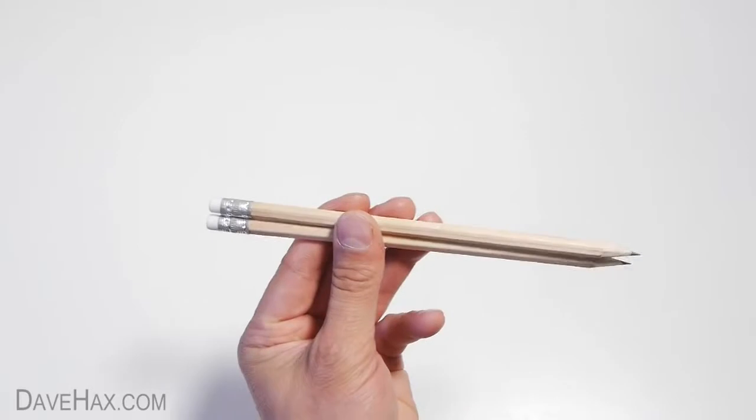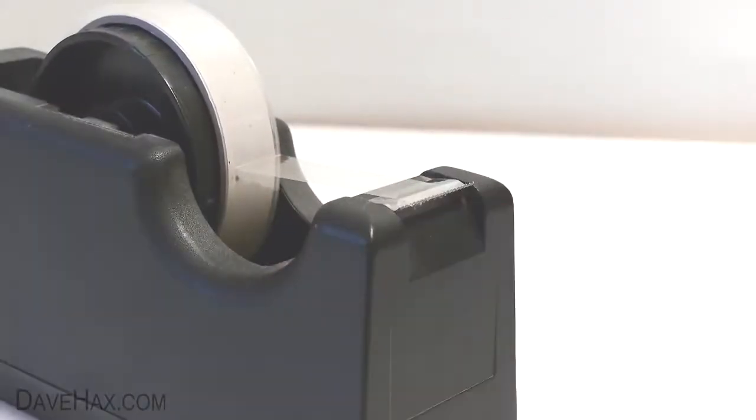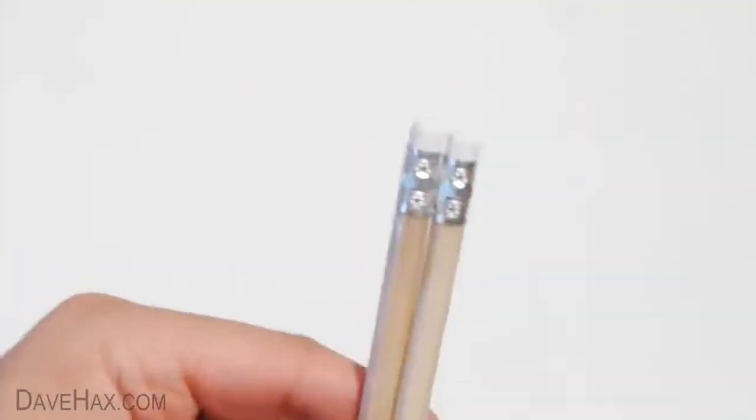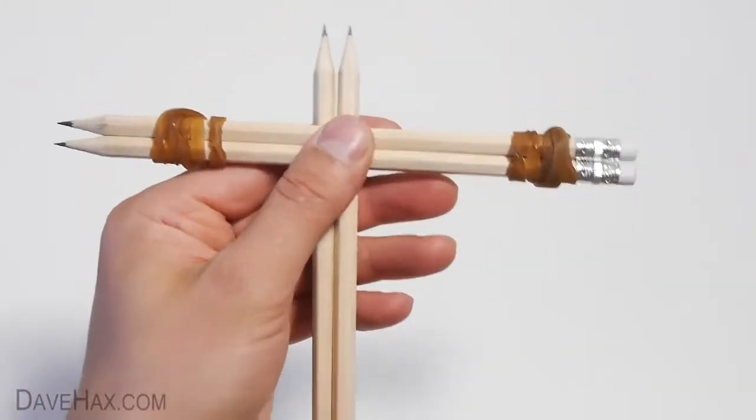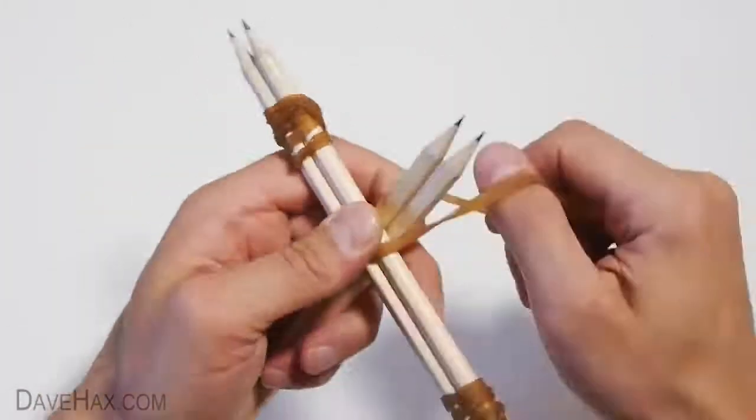Then take another two pencils and hold these together using a strip of tape right at the back, like this. Then put one on top of the other and using another elastic band, fix them together to form a cross.